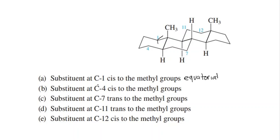Part b: substituent at C4, cis to the methyl groups. The methyls are up. At C4, up is axial and down is equatorial. So up is axial.